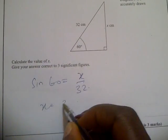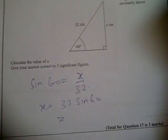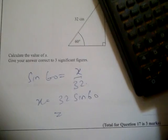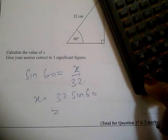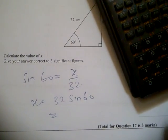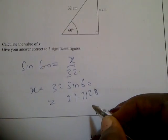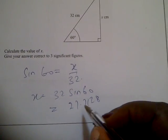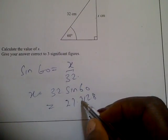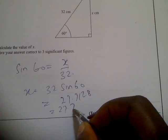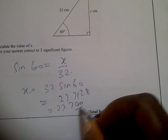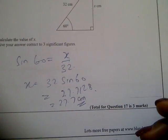So x will be 32 sine 60, which will give you 27.7128. Correcting to three significant figures — one, two, three — which is equal to 27.7 centimeters.